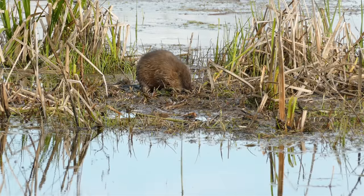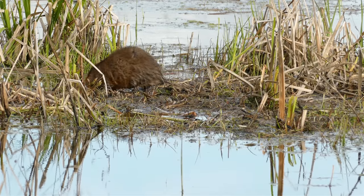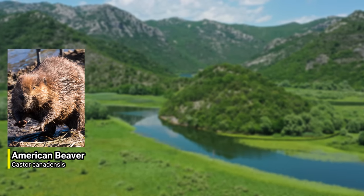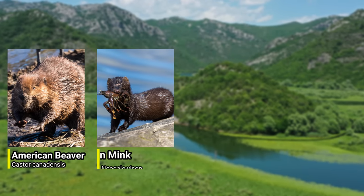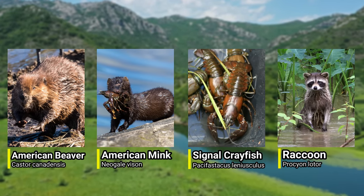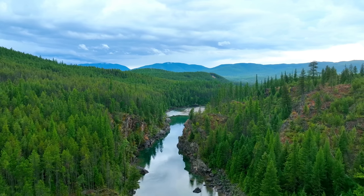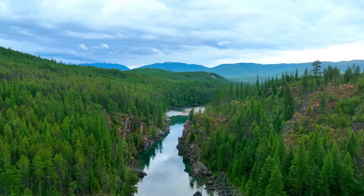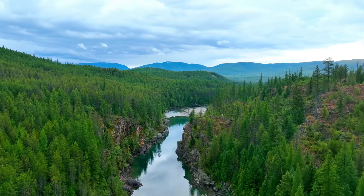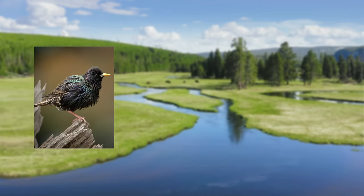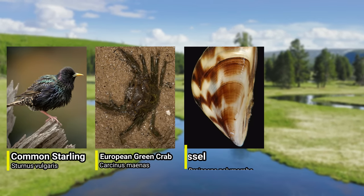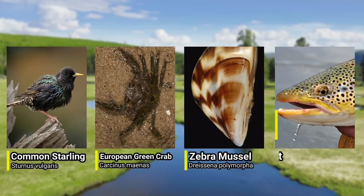There are already plenty of North American creatures that are invasive in Europe, such as the North American beaver, the American mink, the signal crayfish, and the raccoon. Of course this also works the other way around, as there are plenty of European creatures invasive in North America — some great examples are the common starling, the European green crab, the zebra mussel, and the brown trout.